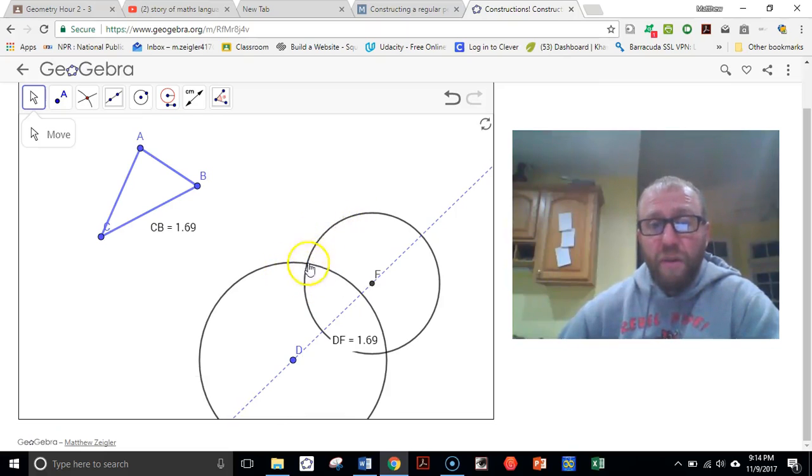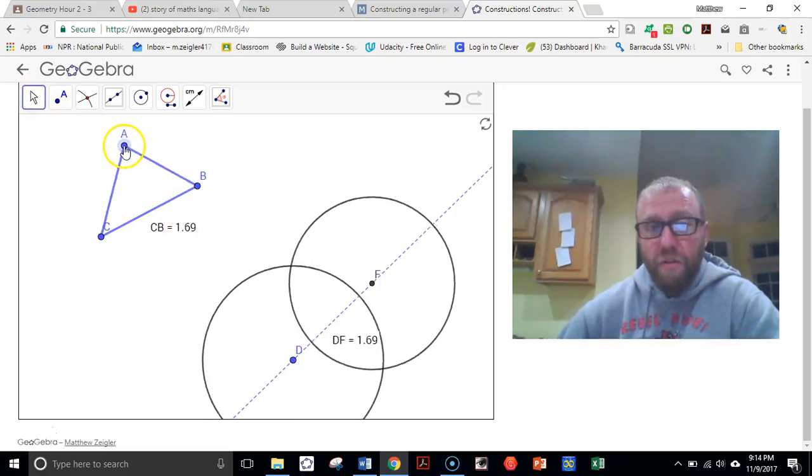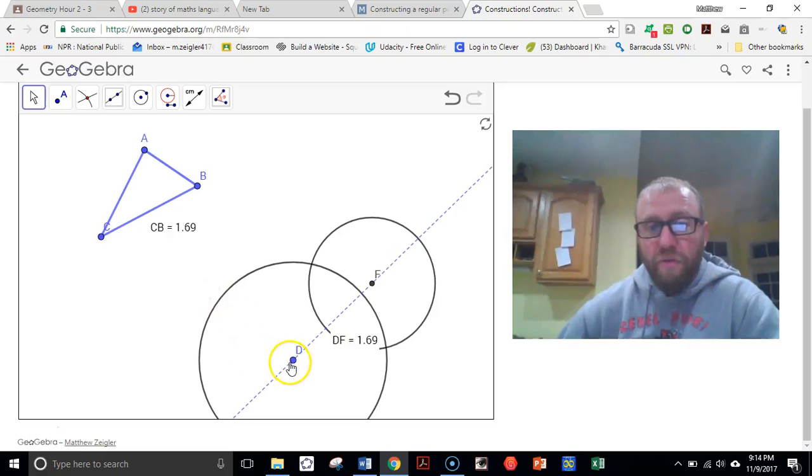Because it's got to be that specific distance from F. The same distance here. Now I can move them. And it also has to be a specific distance from D. The distance from C to A over here.